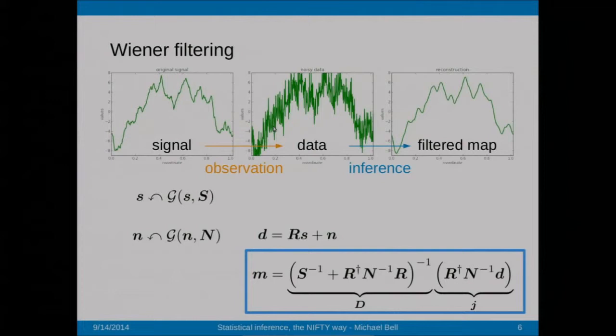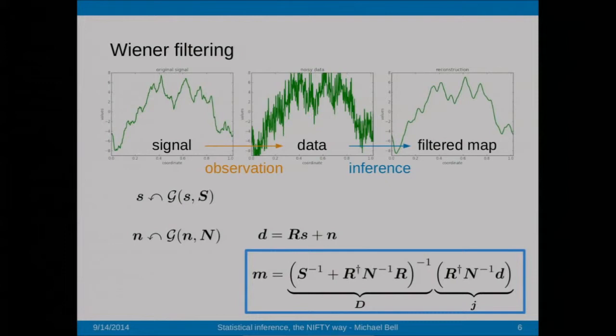We developed Nifty, which provides a mechanism for writing an inference algorithm once and applying it across different spaces. A good prototypical example is called a Wiener filter. A Wiener filter is very commonly used in many of our projects. It turns out to be the core of a whole broad range of inference and machine learning algorithms. If you're familiar with Gaussian process regression, which is a popular machine learning algorithm, it's basically an extension of Wiener filtering.